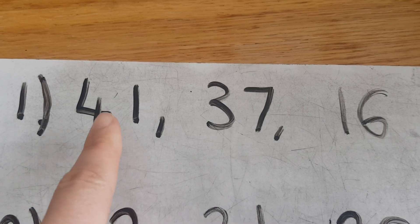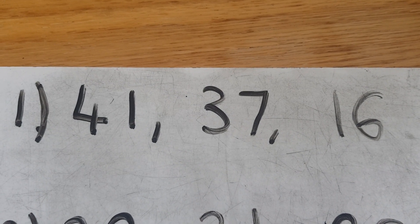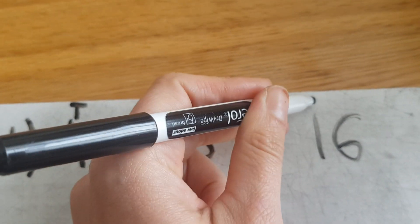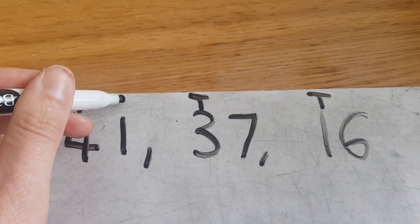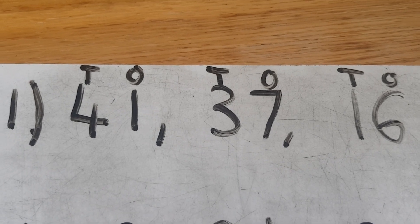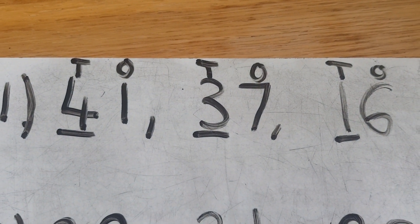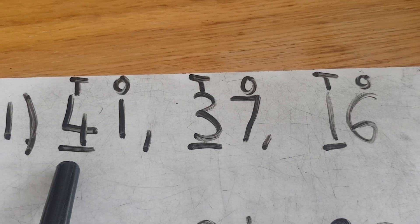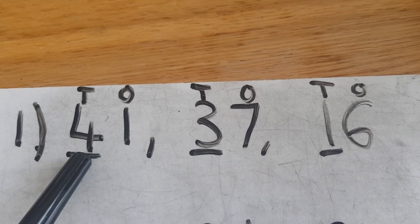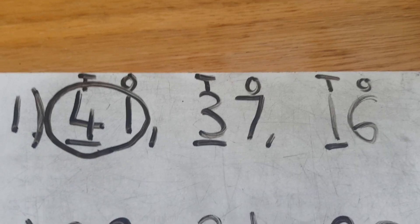Here I've got three numbers for question one: 41, 37 and 16. This method uses the tens and the ones, so I'm going to put a T above all my tens. Remember, the tens are the first digit, and the ones are the second digit. When we're trying to find the biggest number, we focus on the tens first, so I'm just going to underline all the tens. I'm looking for the biggest ten — is it four tens, three tens or one ten? Four is bigger than three and one, so 41 is the biggest number. I'm going to circle 41.